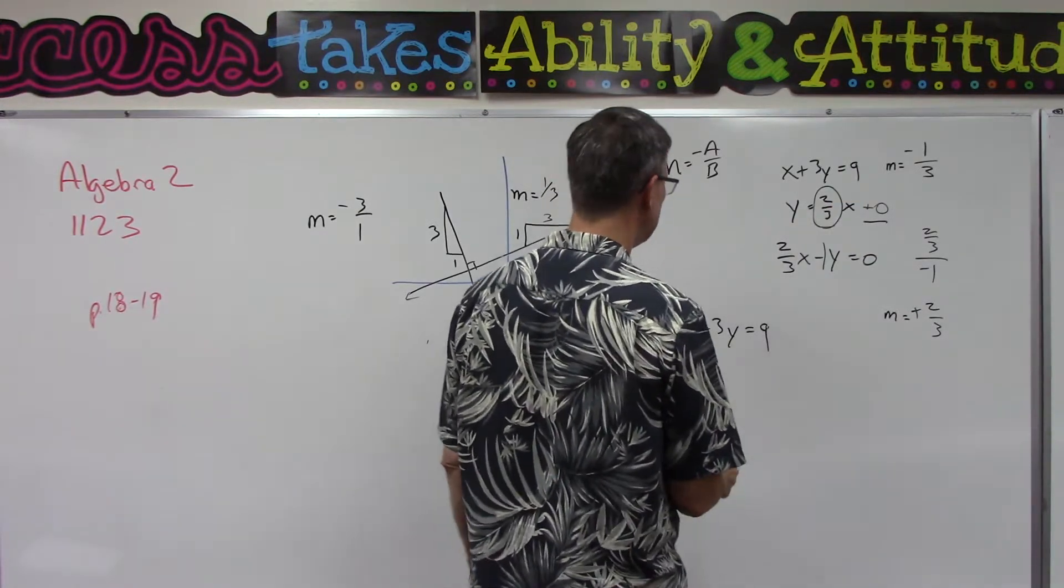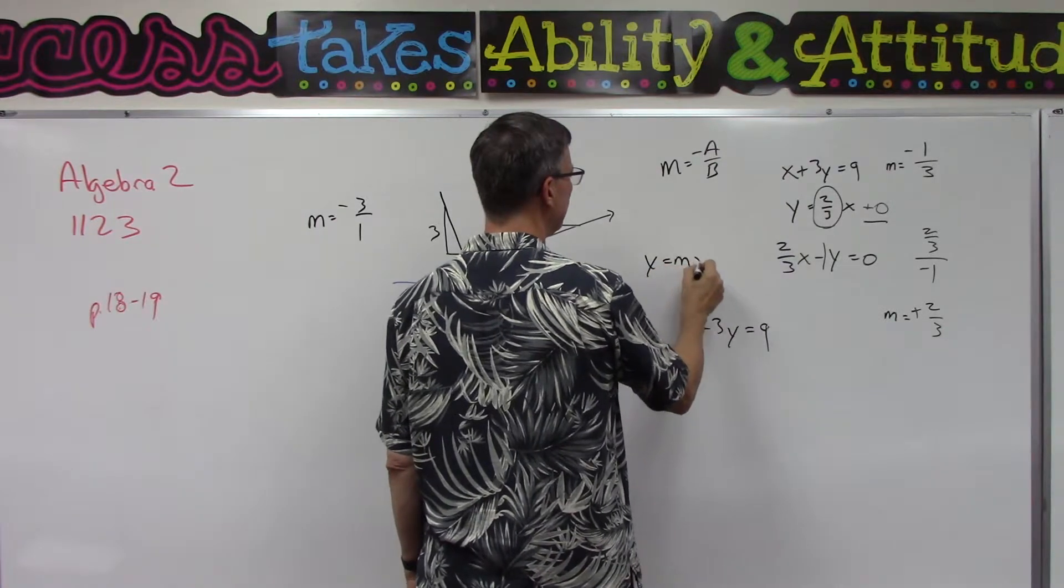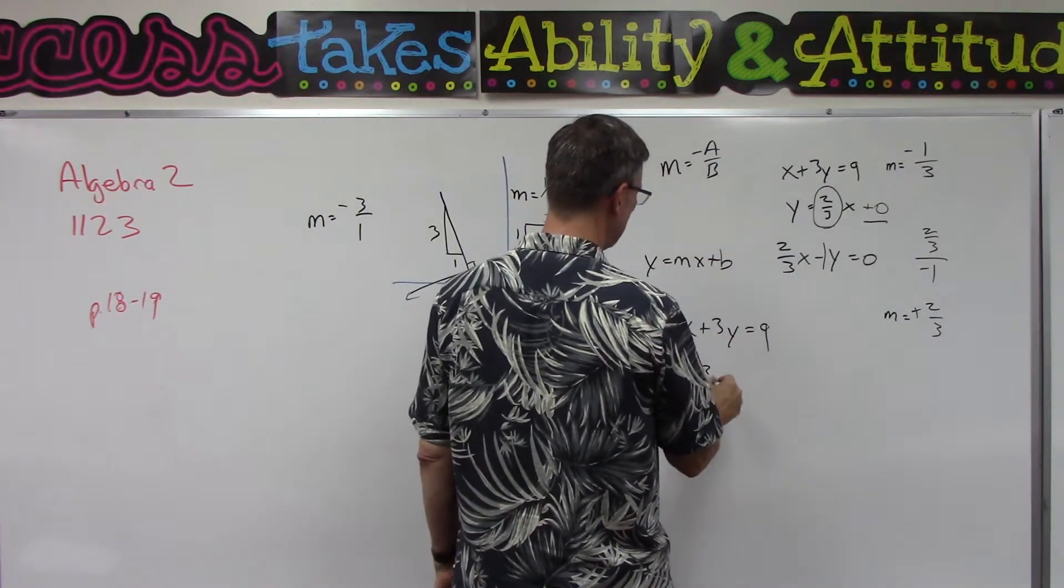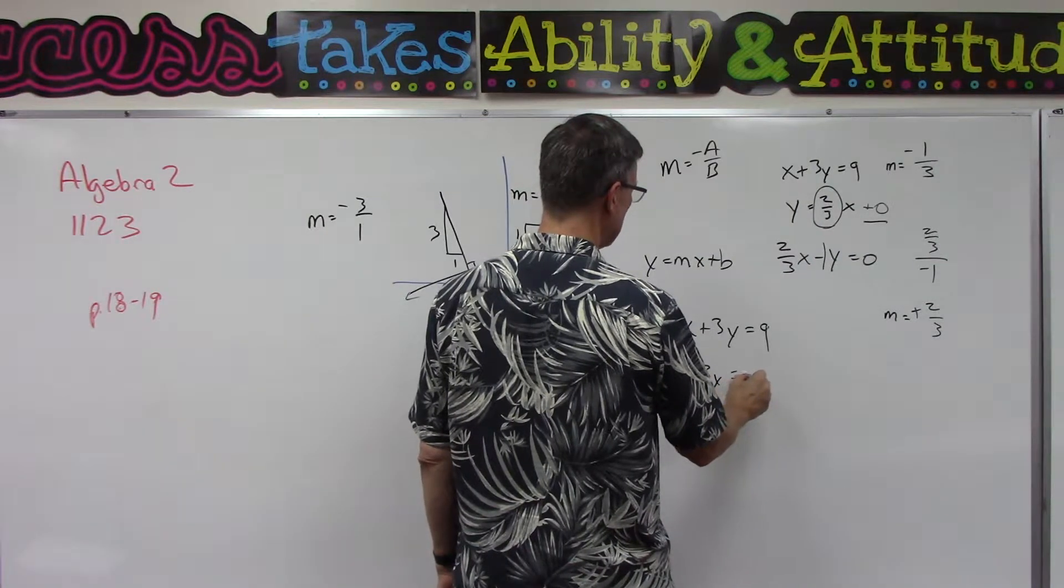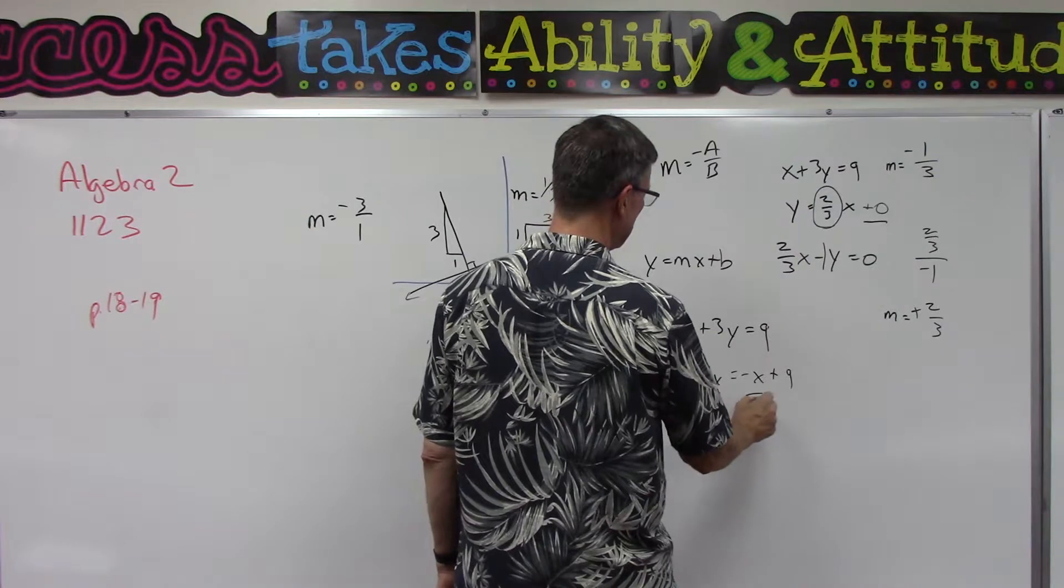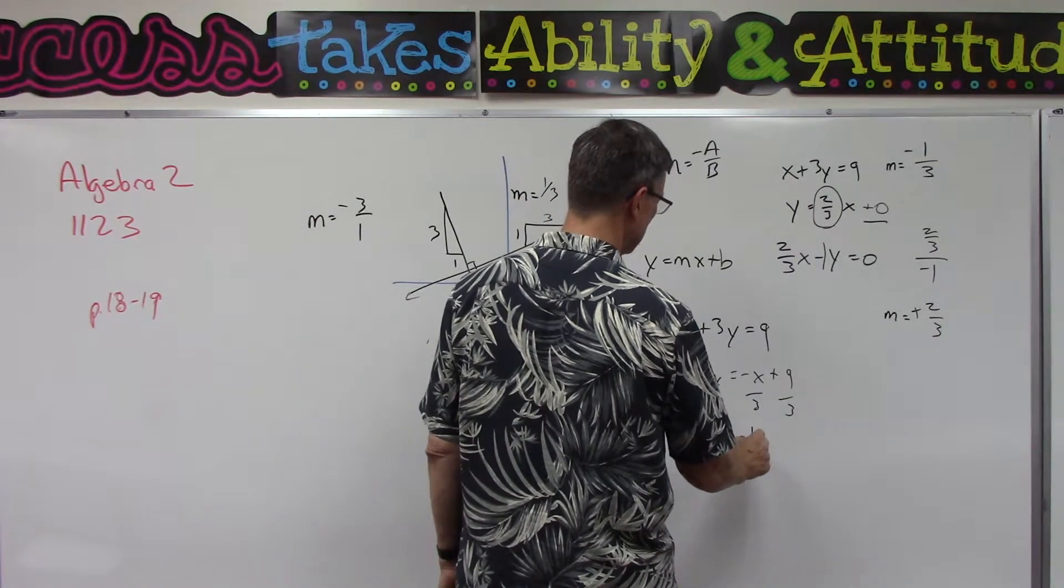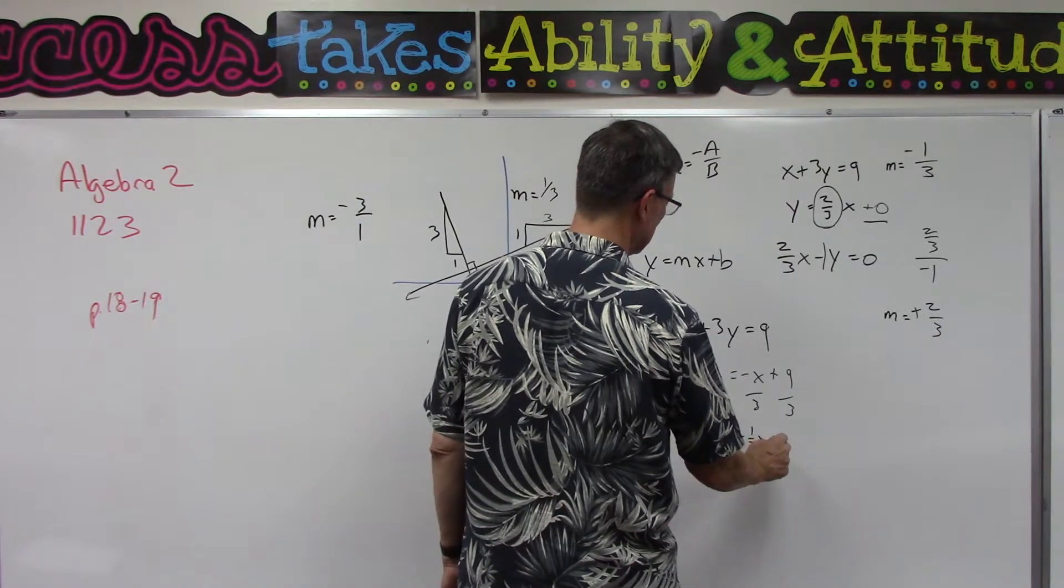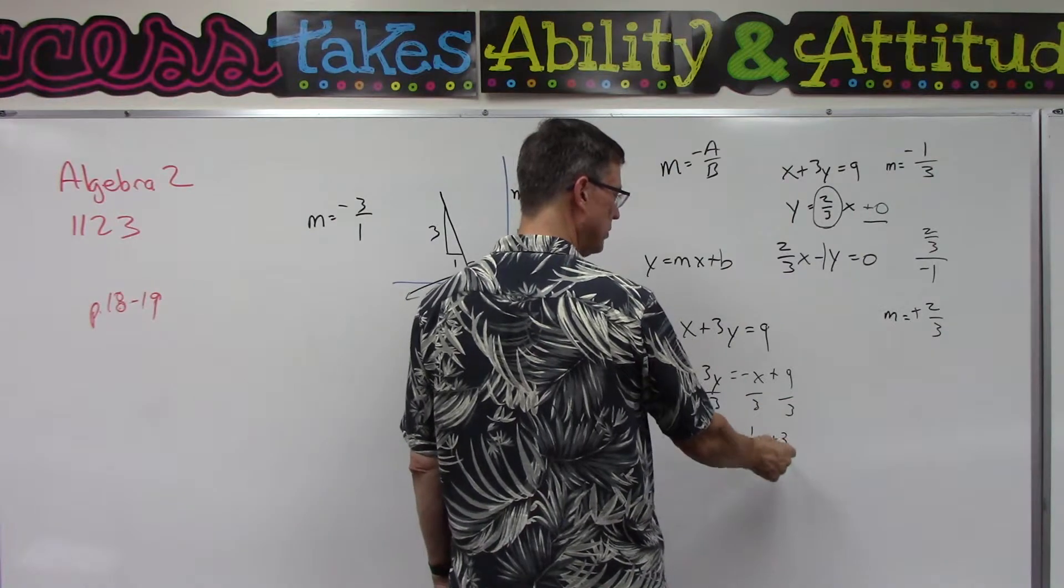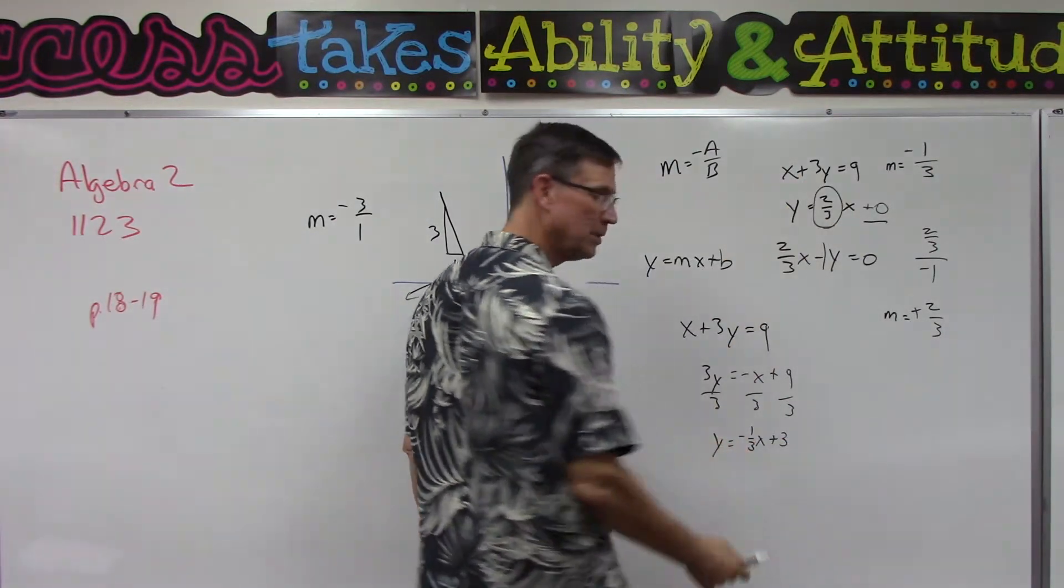And then the x plus 3y equals 9. We know the slope is negative one-third, but let's put this into that, remember, y equals mx plus b form. So if I leave the y here, take the x to the other side, and now I'll divide by 3, so y equals negative one-third x plus 3. So I reduce the 9/3, I get 3.